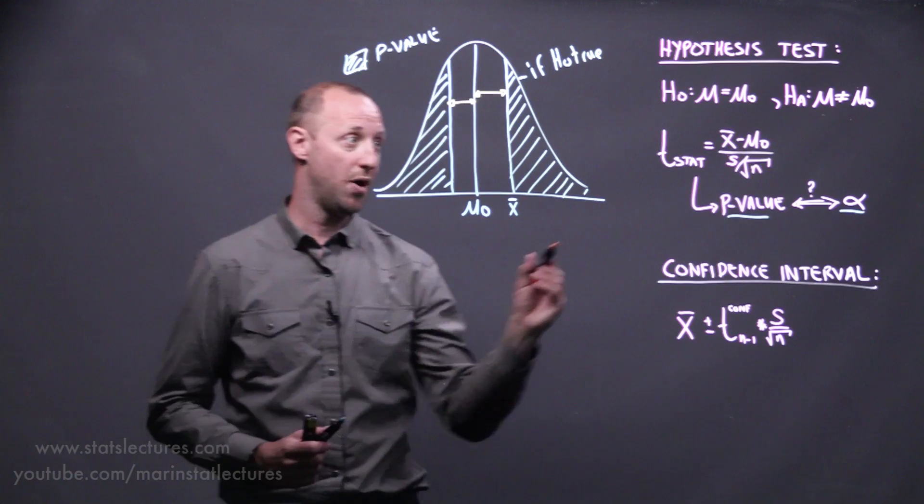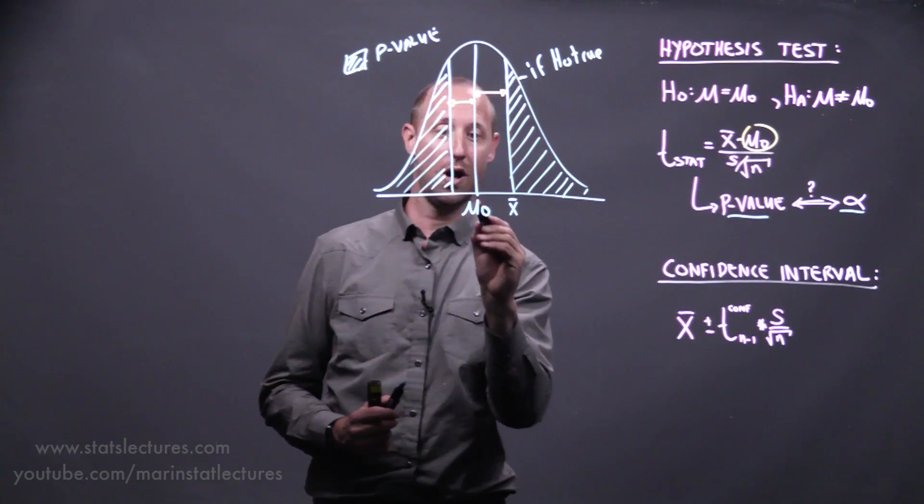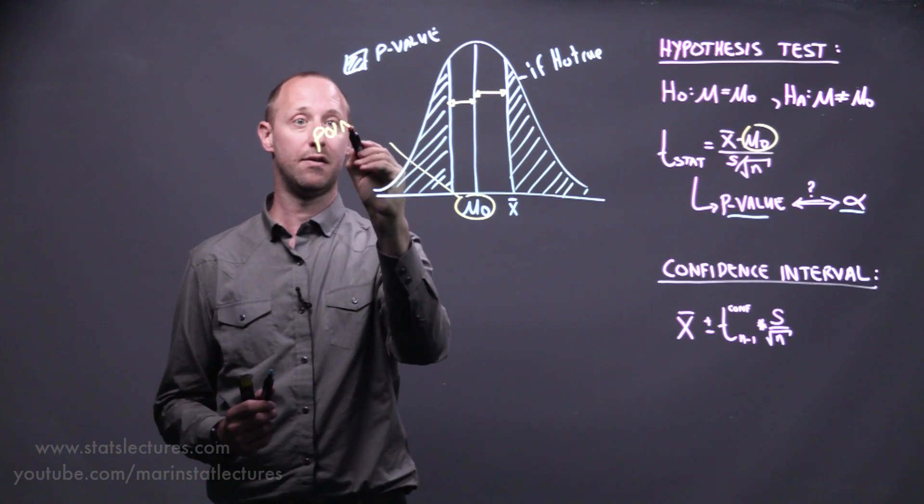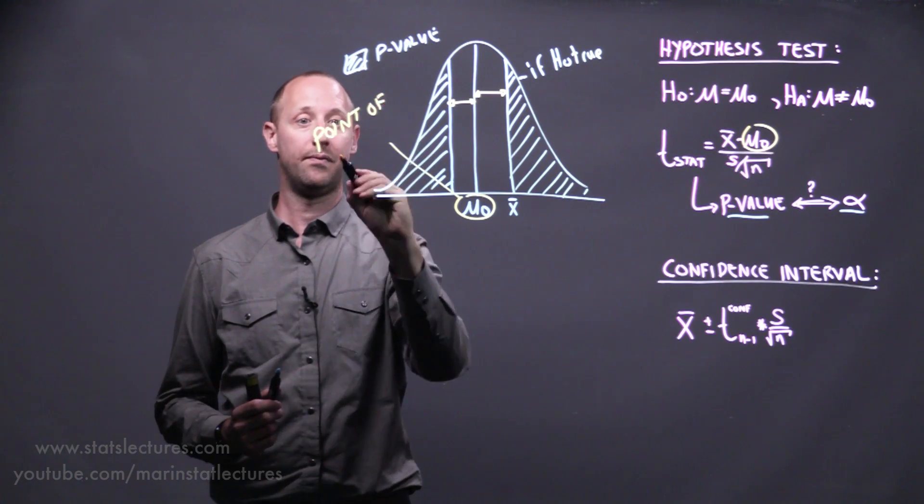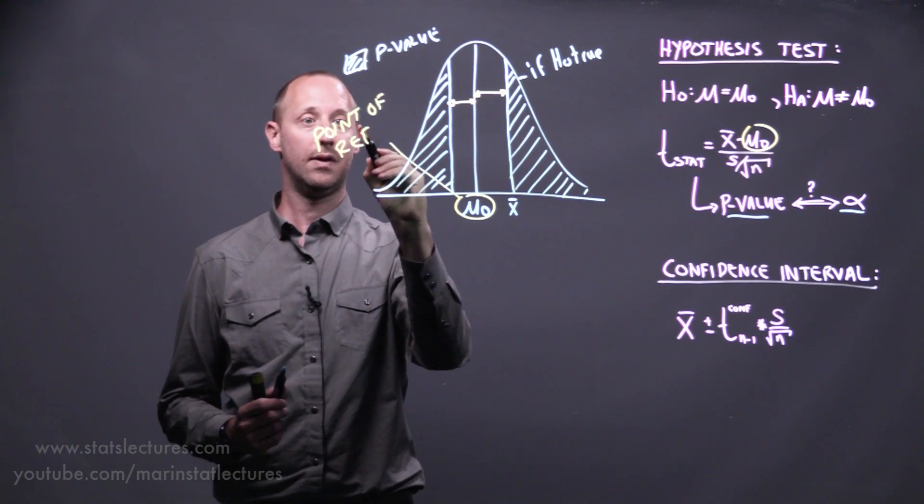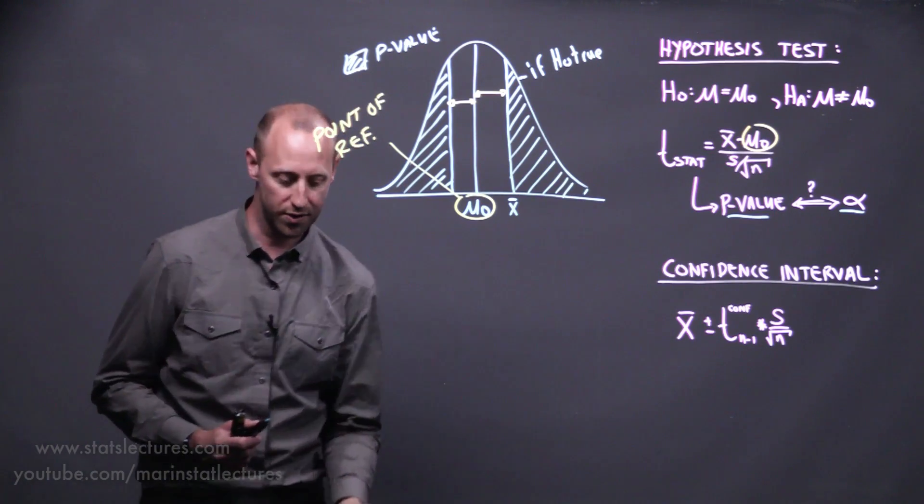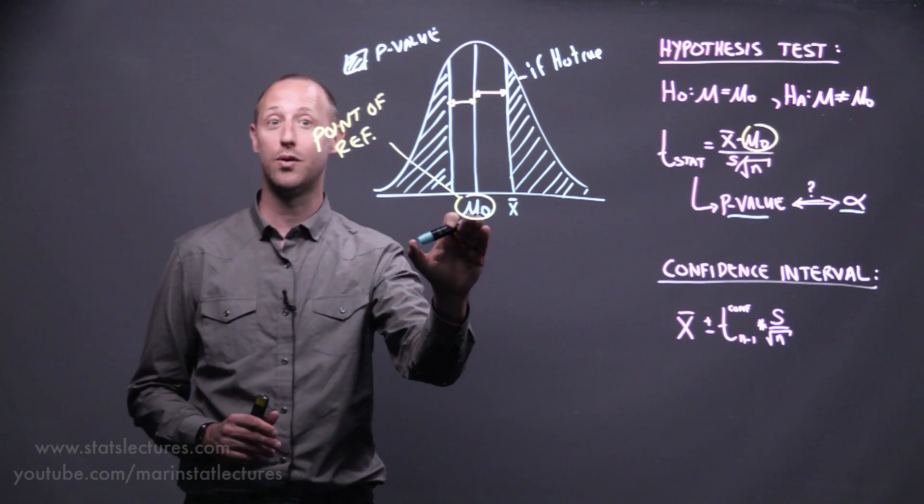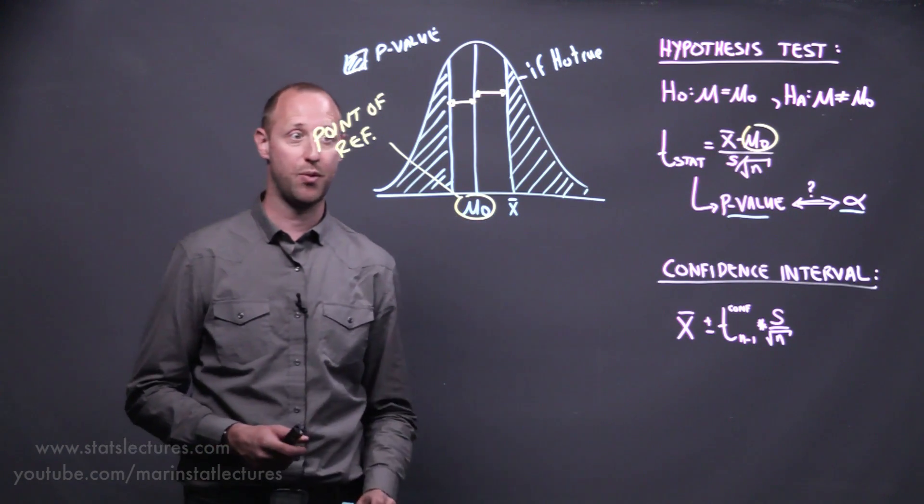You can notice in hypothesis testing, mu-naught is our point of reference. All the statements we're making are looking at how does our estimate compare to a null hypothesis. That's our point of reference.